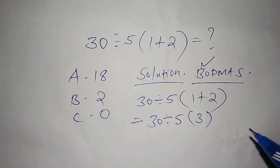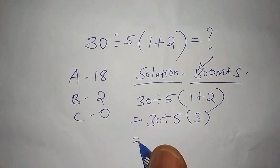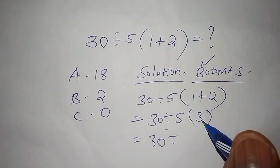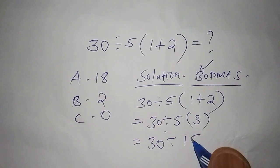From there we must complete working the number outside the bracket, so we shall have this equals to 30, then we divide by 5 multiplied by the number inside the bracket, and 5 multiplied by 3 is 15.